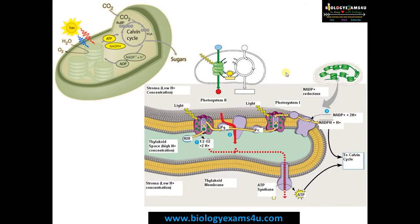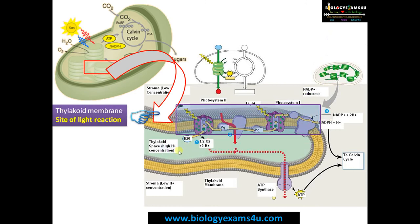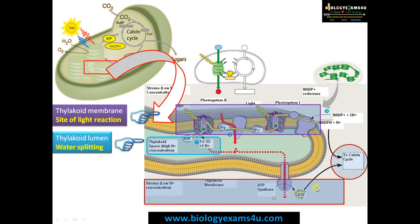The major function of chloroplast is photosynthesis. You can see the granum and individual thylakoids. On the thylakoid membrane there are photosystems and electron carriers — pigments are located on the thylakoid membrane. Therefore the site of light reactions is the thylakoid membrane. The thylakoid lumen is where photolysis of water, or water splitting, takes place during non-cyclic photophosphorylation. ATP is synthesized towards the stromal side and utilized to run the Calvin cycle.